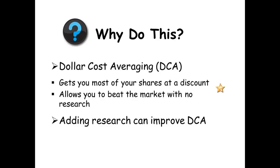Dollar cost averaging allows you to beat out people who invest in that stock only once per year. Someone might buy a bunch of Disney stock all at once, but if you're using dollar cost averaging, you'll have most of your stock at a discount — at an average price lower than what that other person paid. To use it, you determine how much you want to invest within a given time frame and divide it into sub time frames.